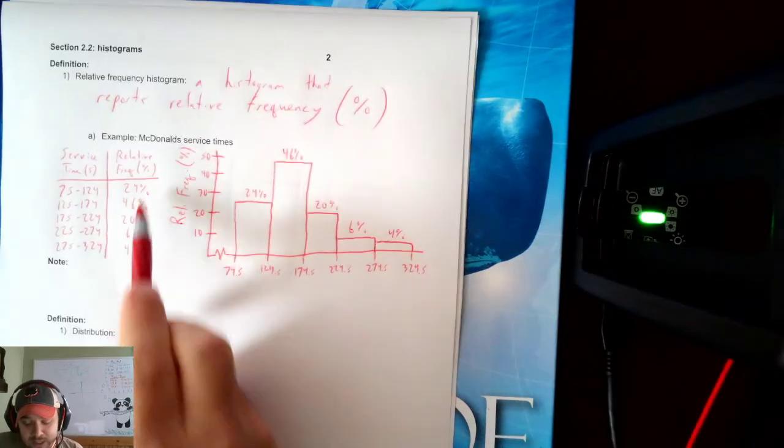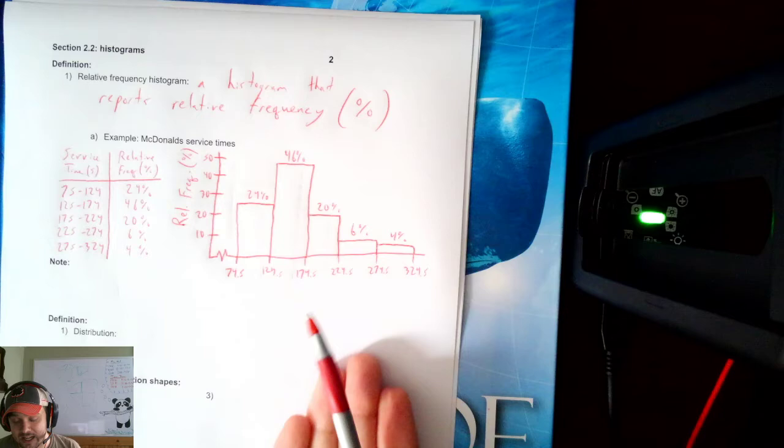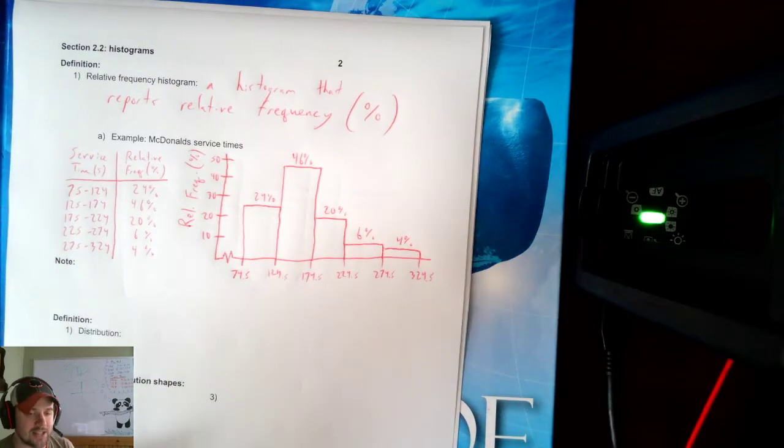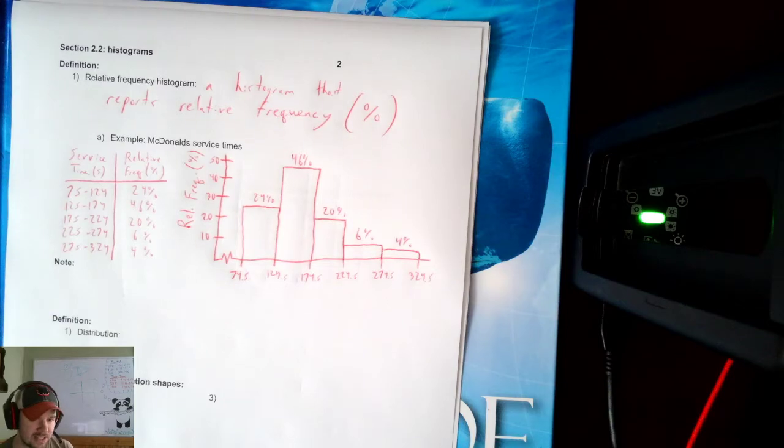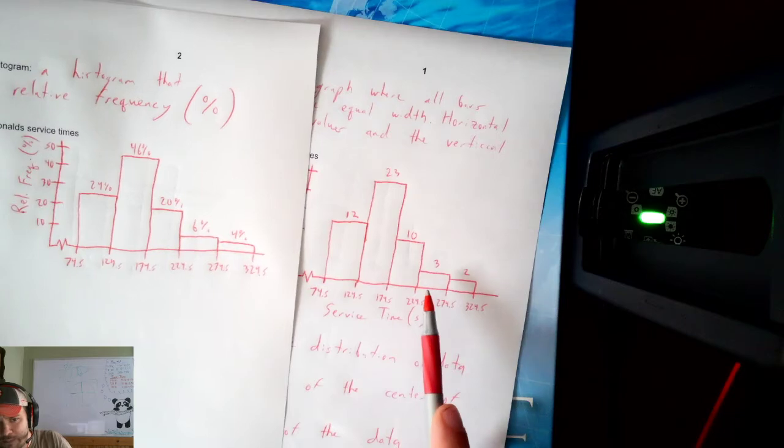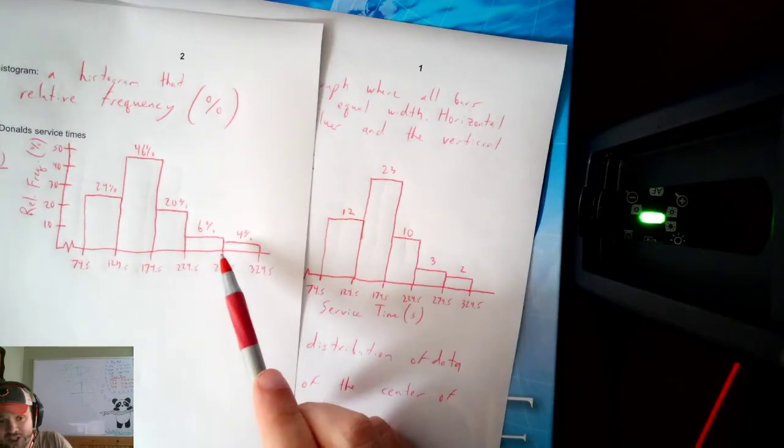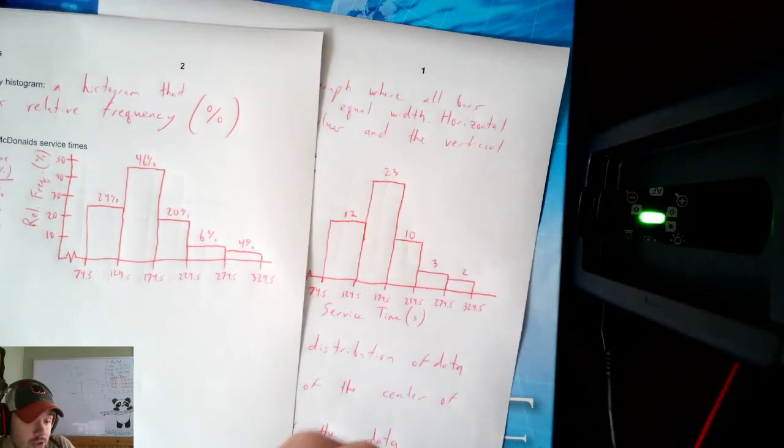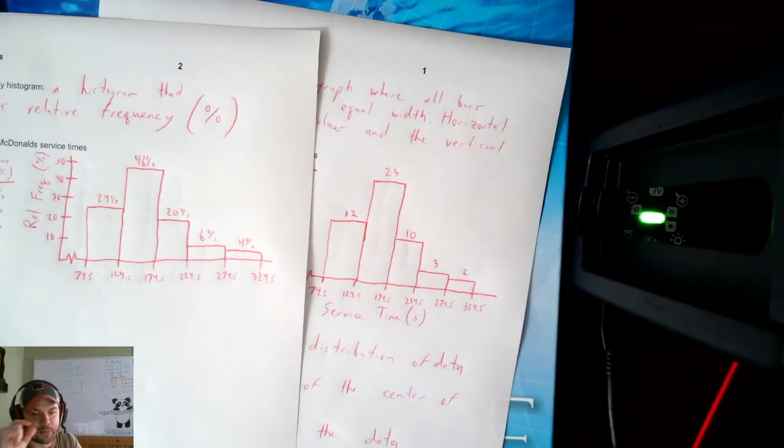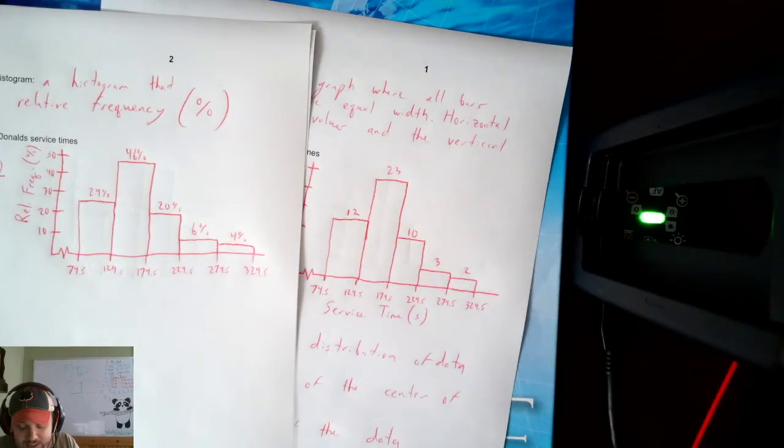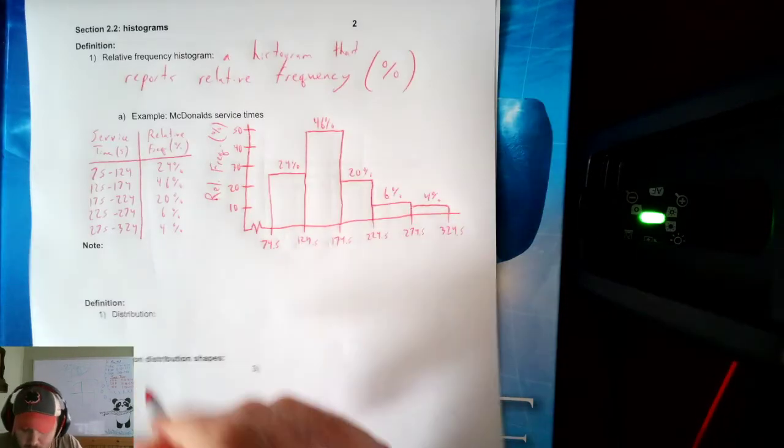And that is a relative frequency histogram. Notice, all I'm doing is taking the table and converting it into a bar graph. We have two different flavors of histograms just like we had multiple flavors of frequency tables. Now look at something. Look at the shape. Does this shape look wildly different from this shape? It doesn't, does it? These look pretty similar.